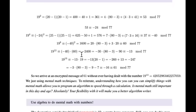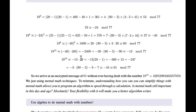We have 19 to the eighth, which is 60. Then we use negative 40 (which is 19 to the fourth) because 4+8=12, so we use two results we already have. We multiply negative 40 times 60 to get this, and after reducing mod 77 we get negative 13 as 19 to the 12th power. So 19 to the 13th power is simply negative 13 times 19, which gives negative 247, reducing to 61 mod 77.